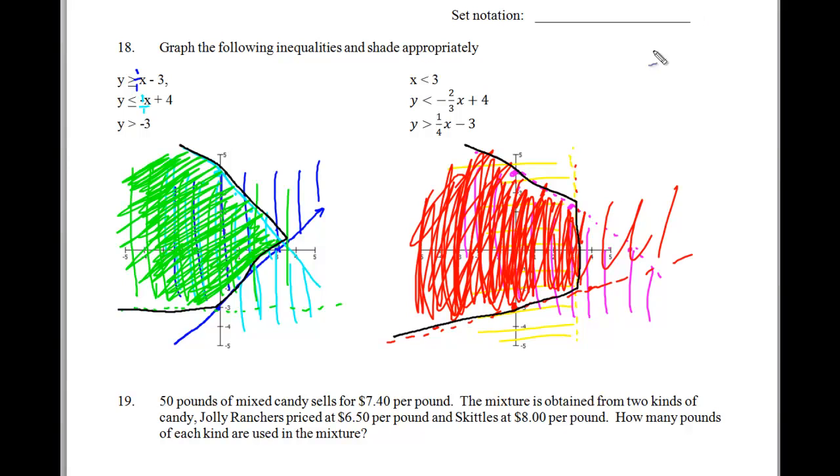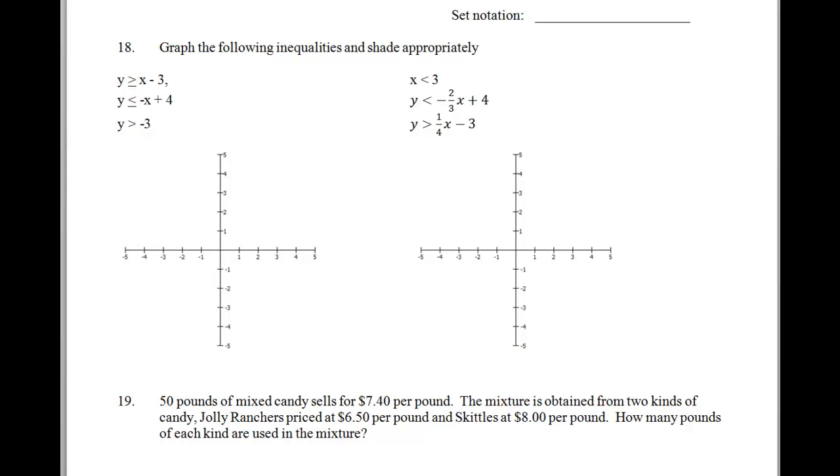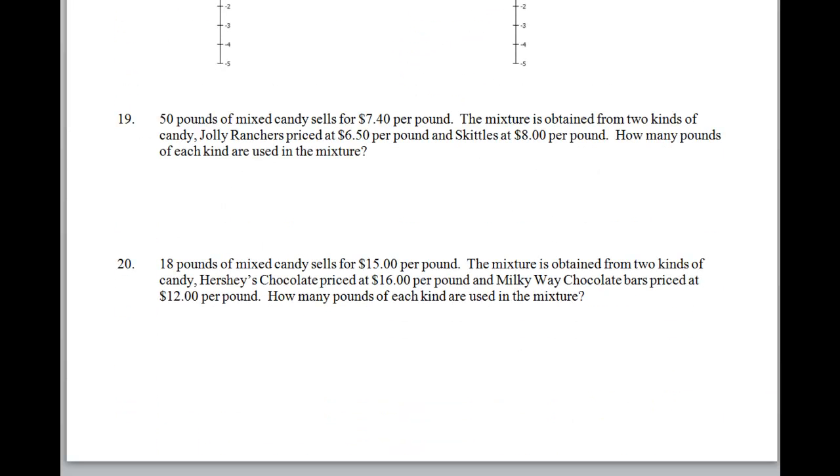Okay. So, let's move back to our normal blue-collar pen, and go to the story problems here. Okay. So, our story problems are very similar. They actually, the numbers have been changed slightly, but they really do have the same kind of setup here. So, what this says is, you have 50 pounds of mixed jelly candies, mixed candy sells for $7.40 a pound. The mixture is obtained from two kinds of candy. Jolly Ranchers priced at $6.50 a pound, and Skittles at $8 a pound. How many pounds of each are used in the mixture?